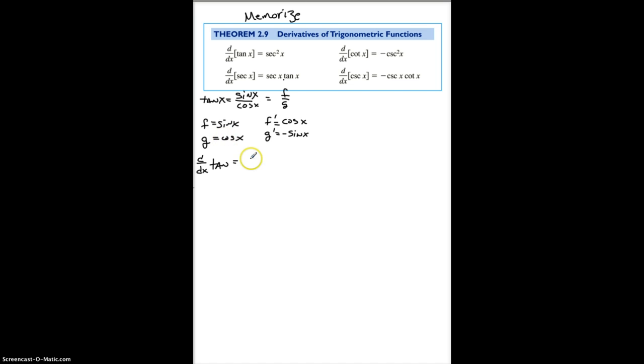So the derivative with respect to x of tangent is, it's the denominator. It's g, so it's cosine times the derivative of f, so that's cosine, minus f, which is sine, times the derivative of g, which is minus sine, divided by g squared, and g is cosine x. I'm seeing a trig identity here. This is cosine squared x, negative, negative is plus, sine squared x, divided by cosine squared x. So, this is 1 over cosine squared x. Don't want to write it that way, so let's write it as secant squared x. Very straightforward.